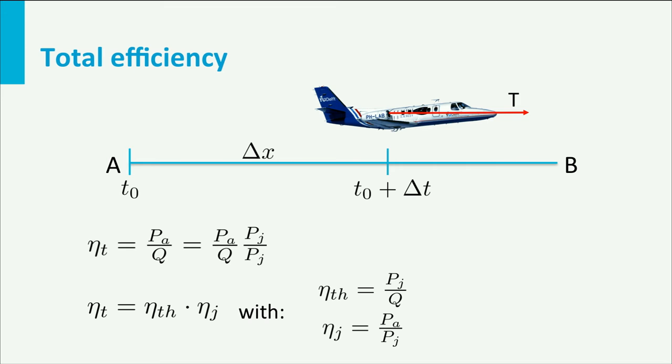The total efficiency can then be written as propulsive efficiency multiplied with thermal efficiency. Let's have a closer look at the propulsive efficiency. Propulsive efficiency eta J is defined as power available divided by jet power. Now, if we write out these terms, then power available of course is thrust times airspeed and jet power is half m-dot vj squared, which is the rate of kinetic energy behind the engine, minus a half m-dot times the airspeed squared, so the speed of the aircraft.